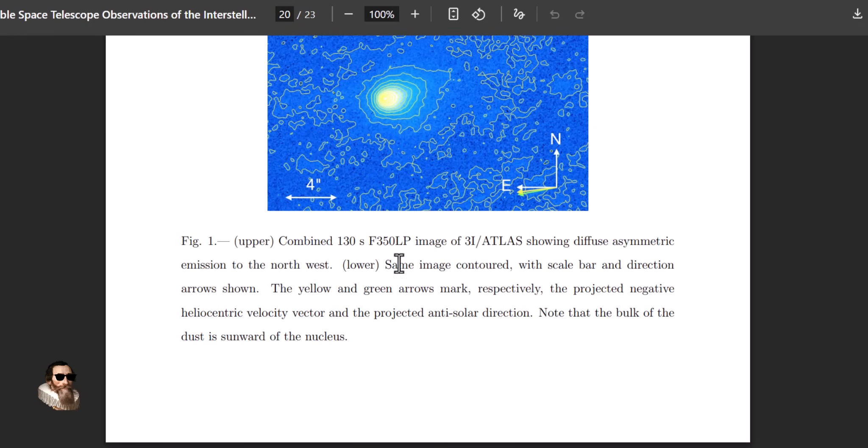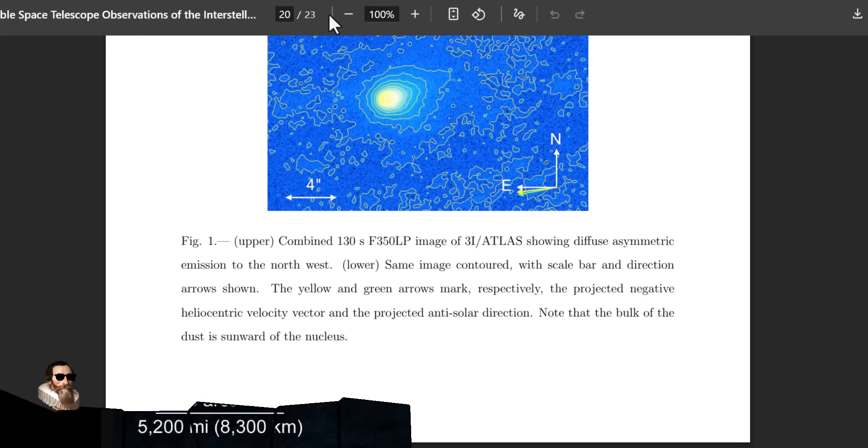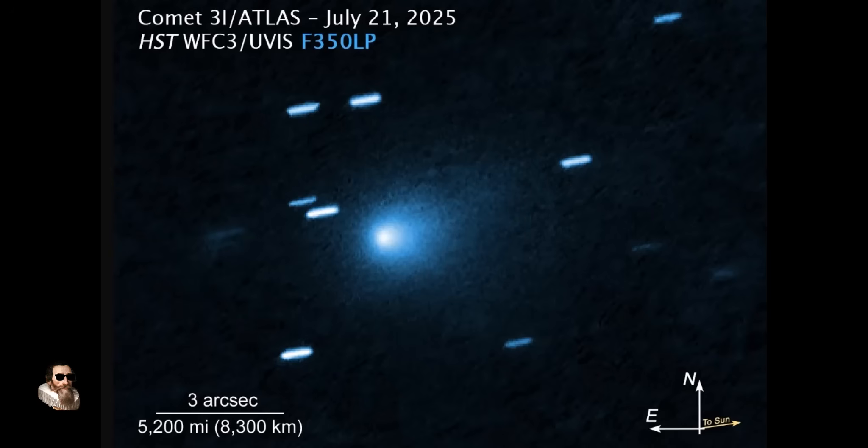As of now, 3i Atlas is between the orbits of Mars and Jupiter and it's moving inwards towards its sun close approach. And this will take place on October the 29th and 30th of this year.